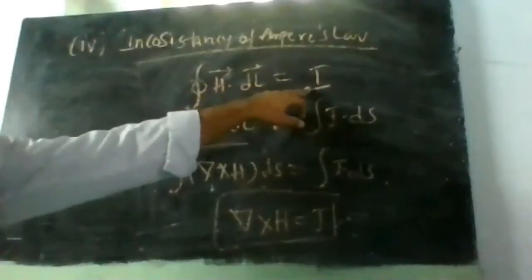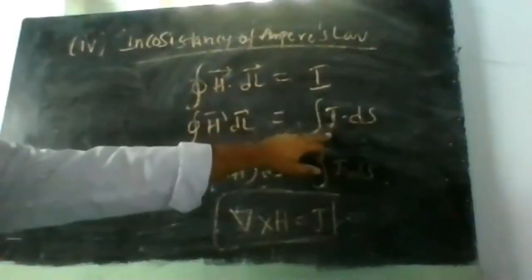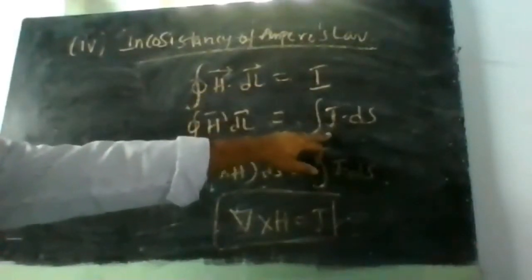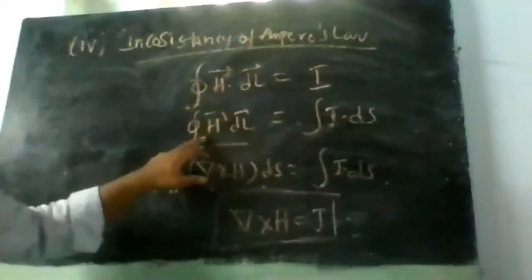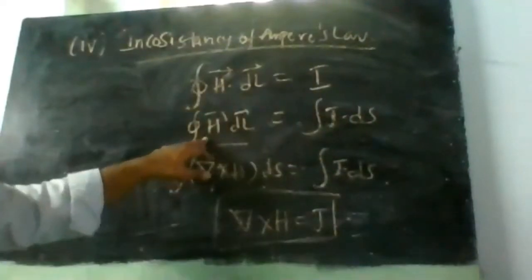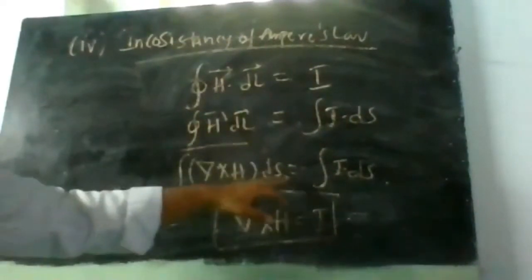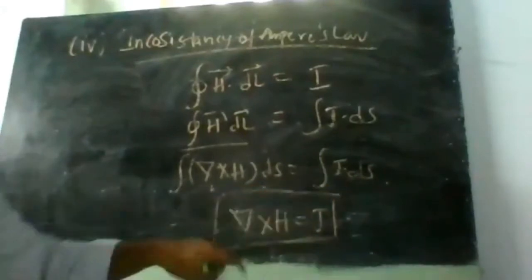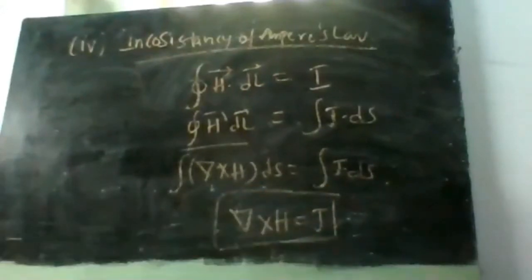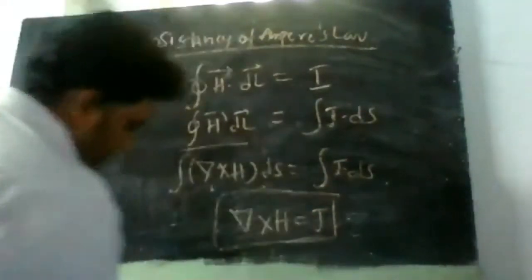I can be written as ∫J·dS in terms of current density. Then using Stokes' theorem, the line integral is converted to a surface integral: ∫(∇×H̄)·dS = ∫J·dS, giving us ∇×H̄ = J.